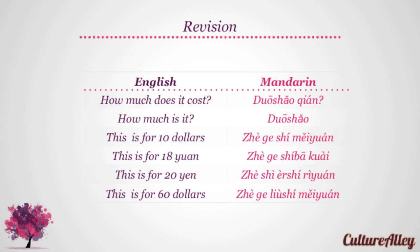Now let's review some phrases that we've covered as well. How much does it cost? translates to duo shao qian. While how much is it? becomes duo shao. This is ten dollars translates as zhe ge shi mei yuan. While this is eighteen yuan is zhe ge shi ba kuai. Similarly, this is twenty yen is translated as zhe shi er shi yuan. And finally, this is sixty dollars will be zhe ge liu shi mei yuan.